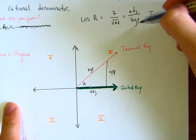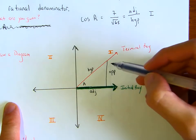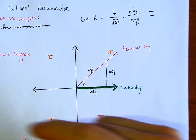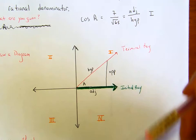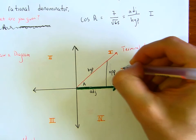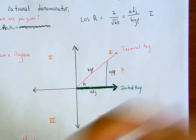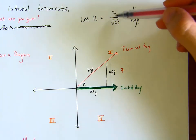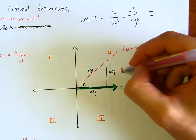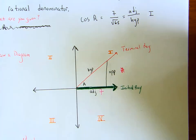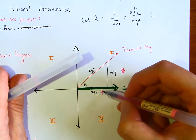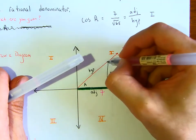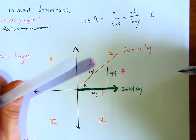If you have this triangle and cosine of angle a is 7 over square root of 65, and cosine is adjacent over hypotenuse, then for this angle a, the adjacent side has to be 7 — the numerator is 7. And the hypotenuse — the distance from here to here — has to be square root of 65.